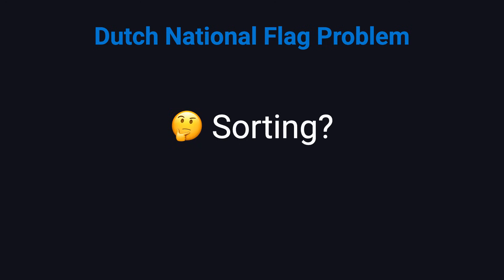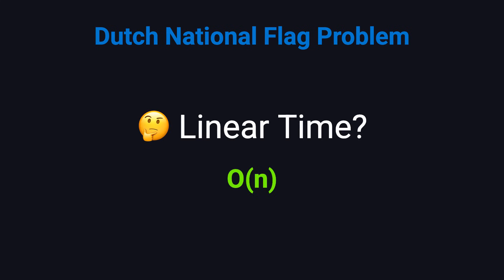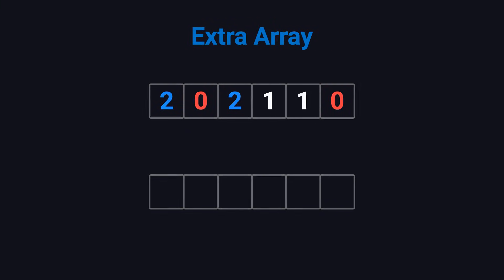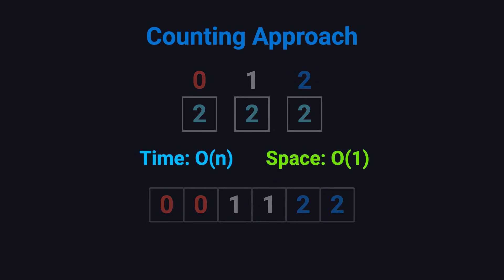At first glance, you might think: why not just use quicksort or mergesort? That would work, but those algorithms take O(N log N) time and don't take advantage of the fact that there are only three possible values. In interviews, the expected solution runs in linear time, O(N). Some people also think about using an extra array — placing 2s on the right, 0s on the left, and filling 1s in the middle. That scans the array once but uses extra space, so it doesn't meet the in-place requirement. Another straightforward approach is counting: scan the array once and count how many 0s, 1s, and 2s there are, then scan again and overwrite the array. This runs in O(N) time and uses O(1) extra space, but it still requires two passes, so it's not the optimal one-pass solution.